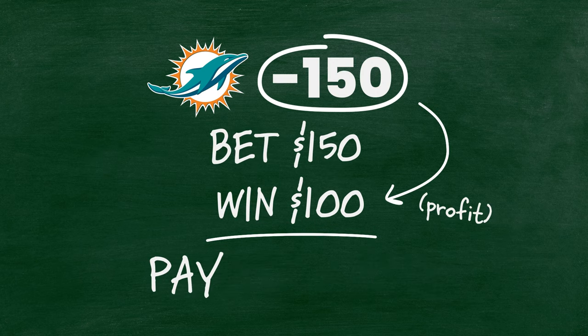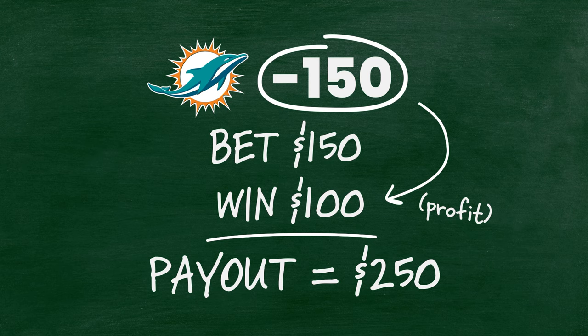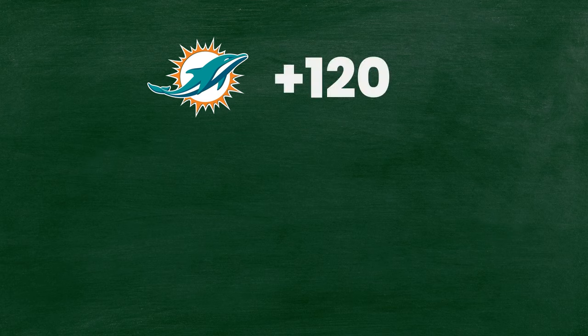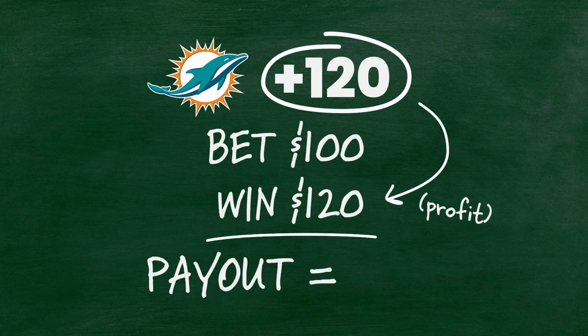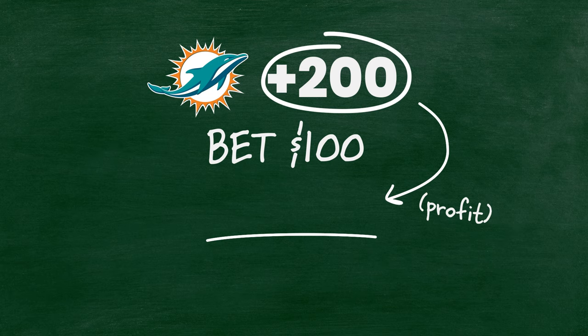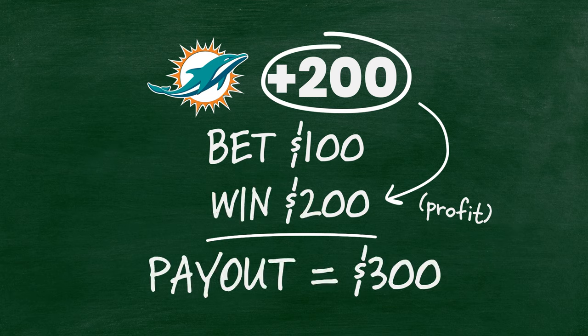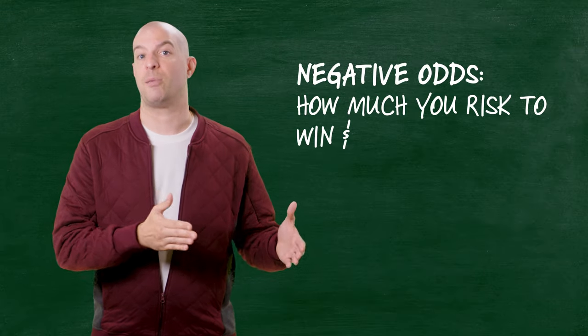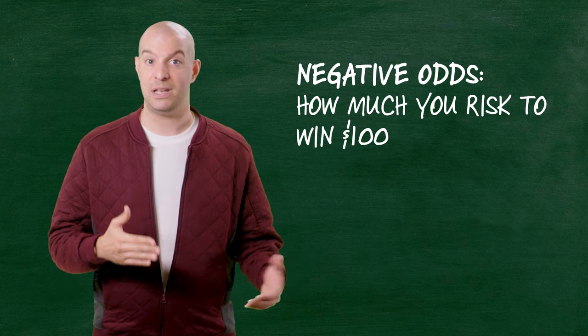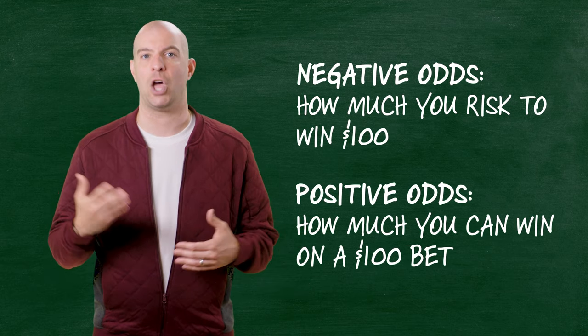If you see a minus 150, you have to bet $150 to win $100, and so on. On the flip side, you'll see some numbers with a plus symbol — for example, plus 120. What that means is that if you bet $100, you'll win $120. If you see plus 200, you would win $200 on a $100 bet. Congratulations! You can now read American odds. Not that complicated — not nearly as hard as algebra. Negative odds: that's how much you have to risk to win $100. Positive odds: that's how much you would win on a $100 bet.